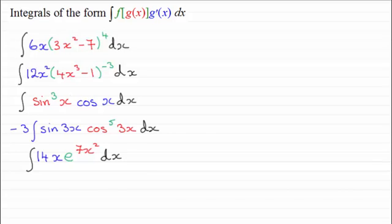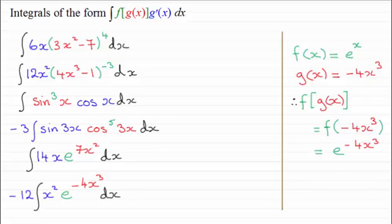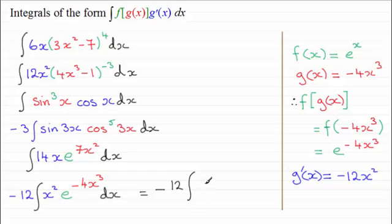Lastly, there's this example where f of x is e to the power x, g of x is minus 4x cubed. Combining the functions f and g of x gives e to the power minus 4x cubed, and differentiating g of x gives minus 12x squared. Notice also that this integral could have been given as minus 12 times the integral of x squared over e to the power 4x cubed — so just like the earlier negative power example, negative powers may come from fractions.